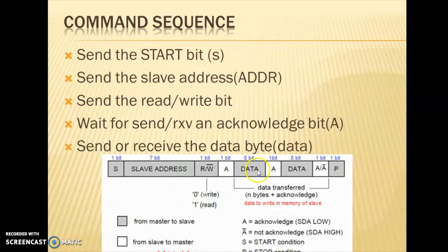Then we send the 8-bit data, and the 9th bit is again an acknowledgement from the slave. If we have further data, we can send that. During the 9th bit time, we will get back an acknowledgement or a not-acknowledgement. Not-acknowledgement means the data was not delivered properly — if there is any mistake, a not-acknowledgement signal is sent and we have to send the data again. If a non-acknowledgement is received, we send that data again along with a repeated start bit. After all transmissions are over, we send the stop bit.